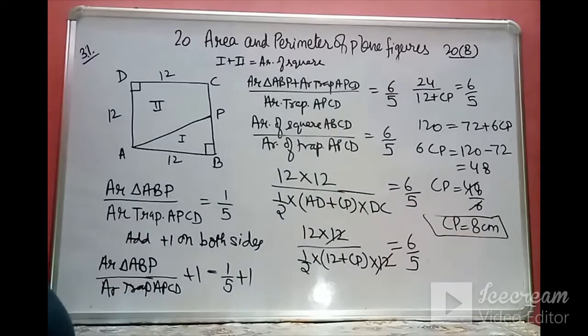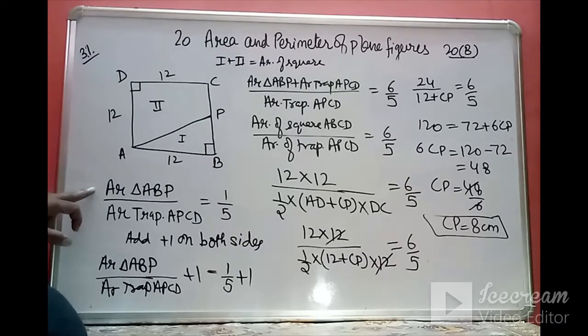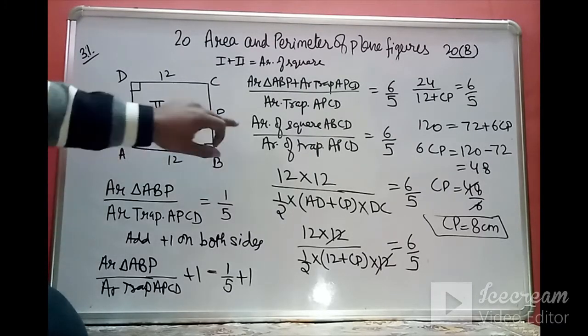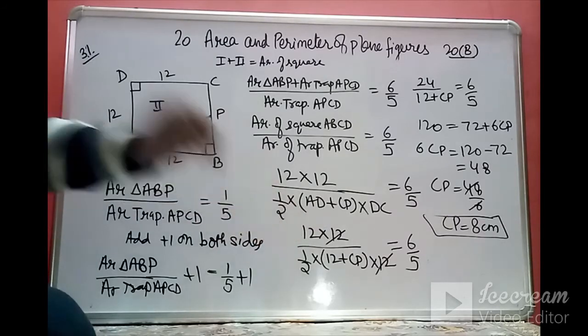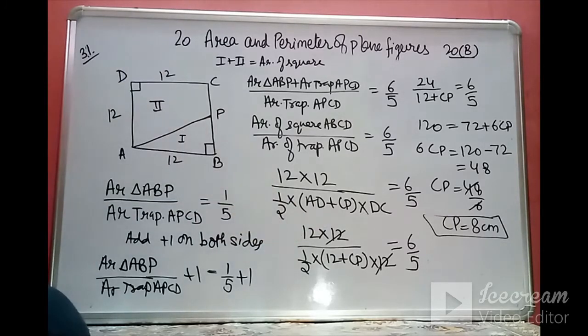By converting the given ratio into the ratio of the square's area to the trapezium's area, we easily found the value of CP equals 8 cm.